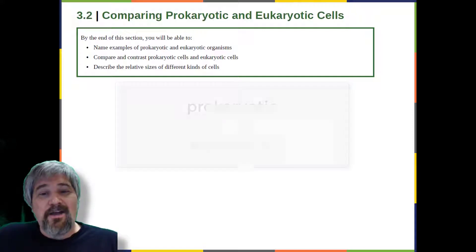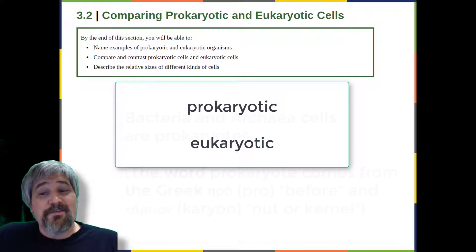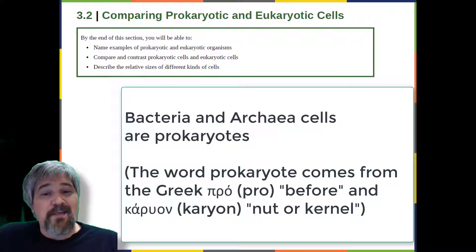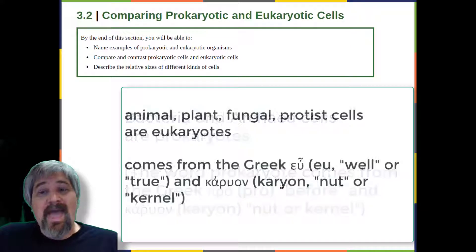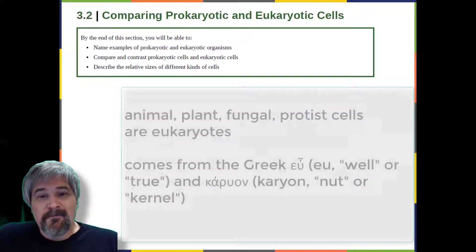Cells fall into one of two broad categories: prokaryotic and eukaryotic. The predominantly single-celled organisms of the domains bacteria and archaea are classified as prokaryotes. Animal cells, plant cells, fungi, and protists are eukaryotes.